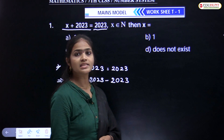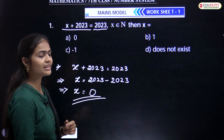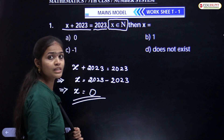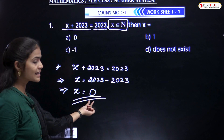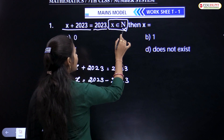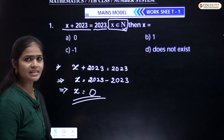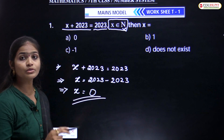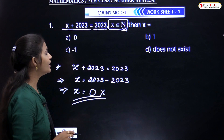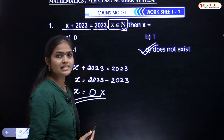So x equals 0. Now observe the condition given in that question — x should belong to natural numbers, which means the value of x should belong to natural numbers. Now, is 0 there in natural numbers? No, 0 is not there in natural numbers. 0 is a whole number. That is why this is not possible. That is why the answer is does not exist.